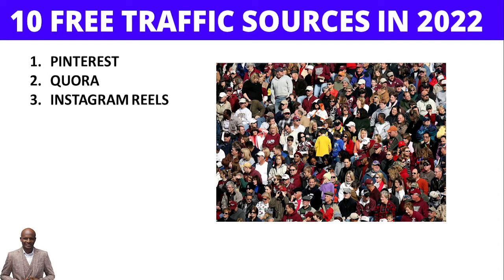Number three is Instagram Reels. You may have one million followers on Instagram, but not many will see your posts because Instagram prioritizes paid reach. Reels, however, appear to be one of the fastest ways to generate traffic. Put your links in your bio section and keep creating quality reels to generate clicks.